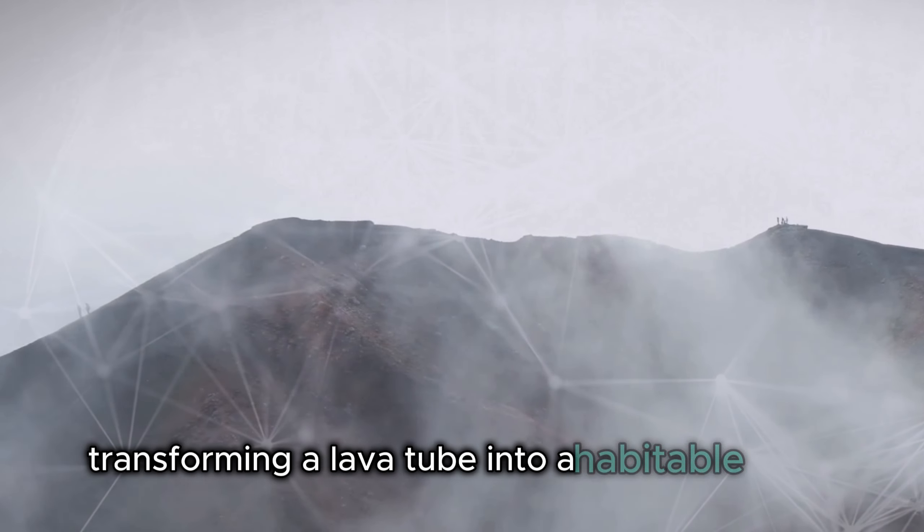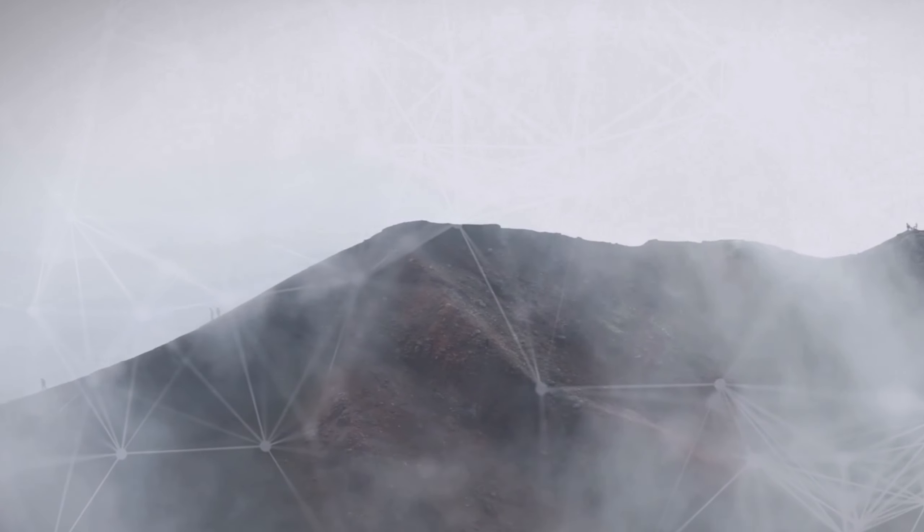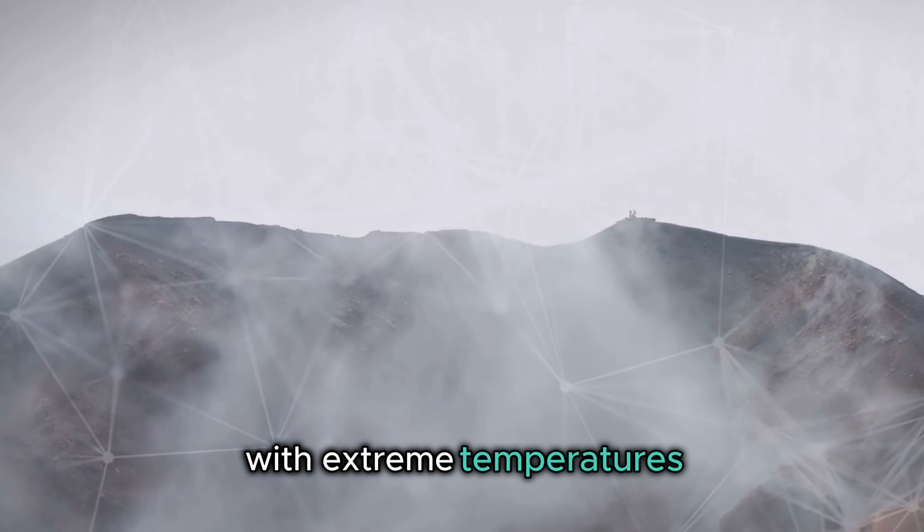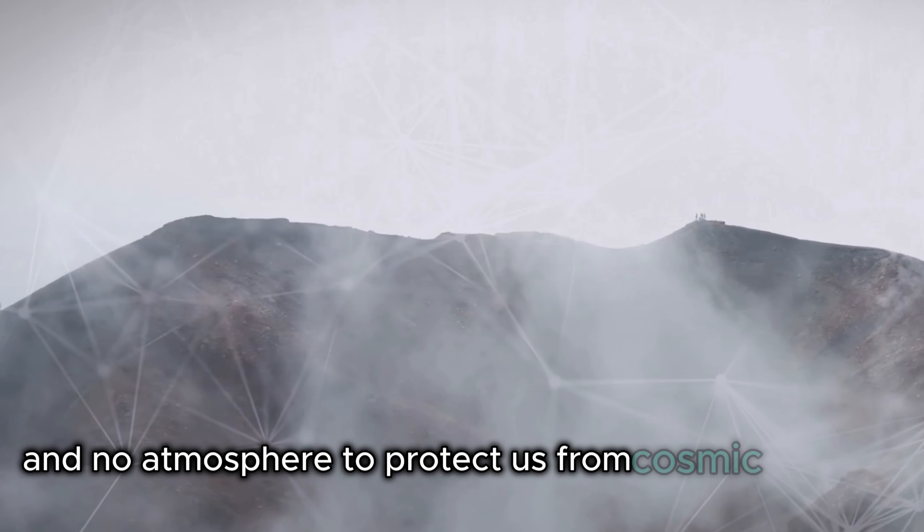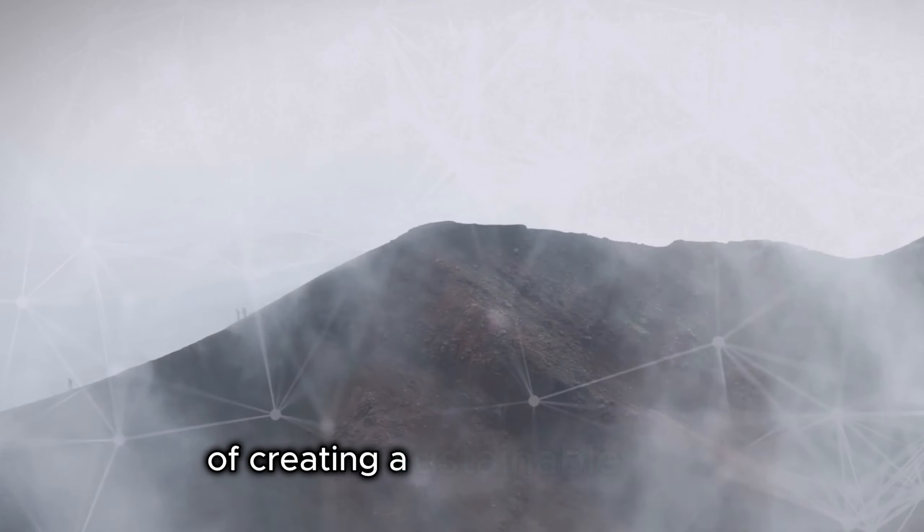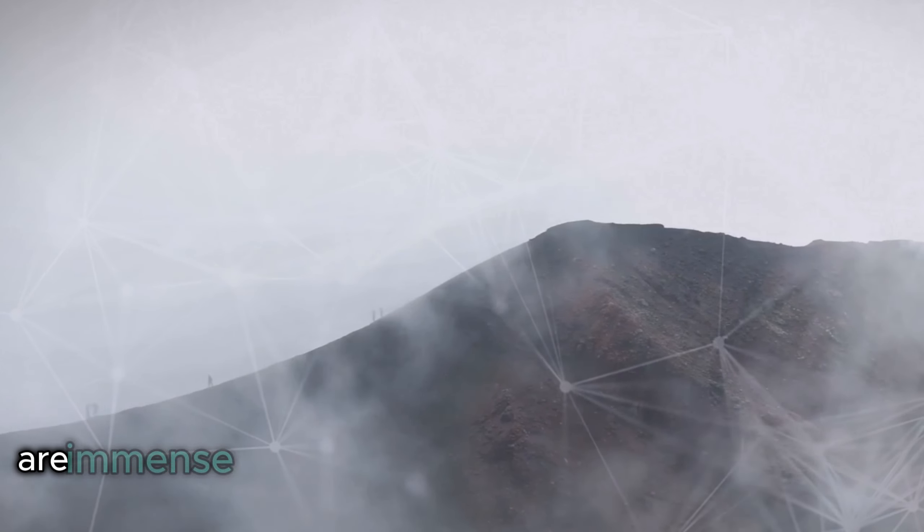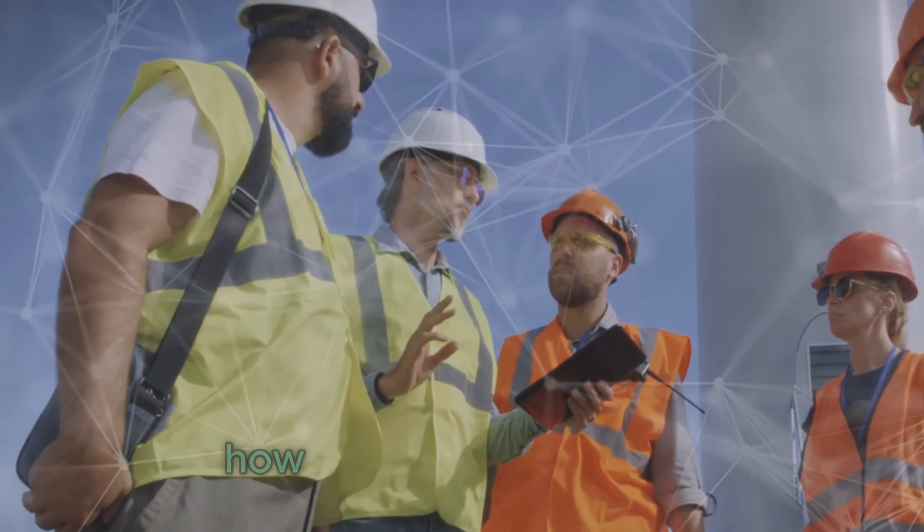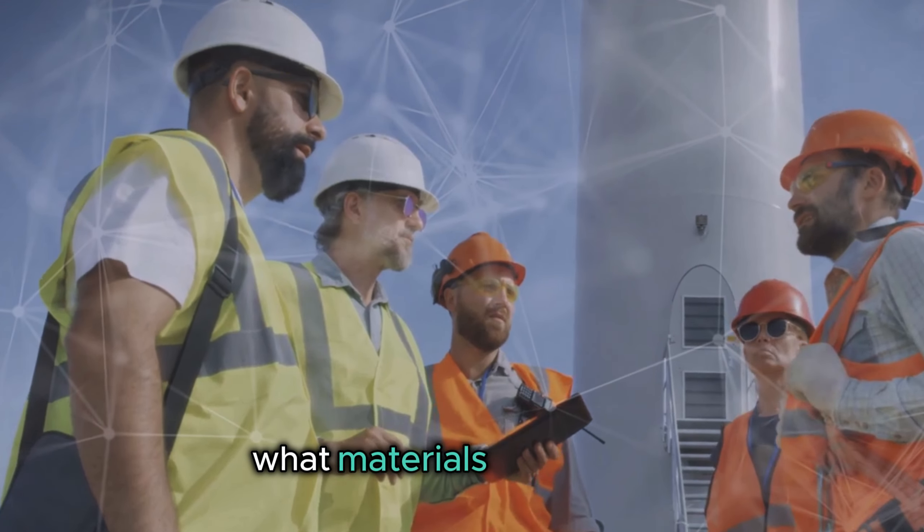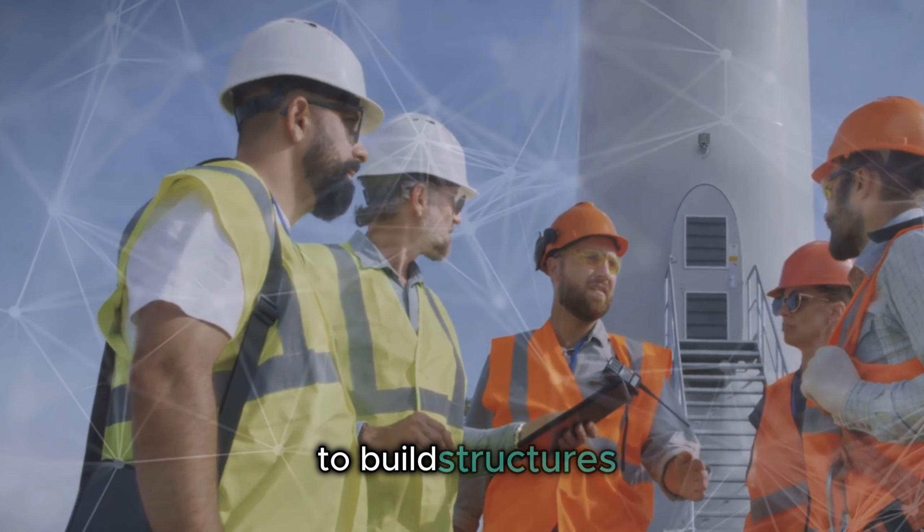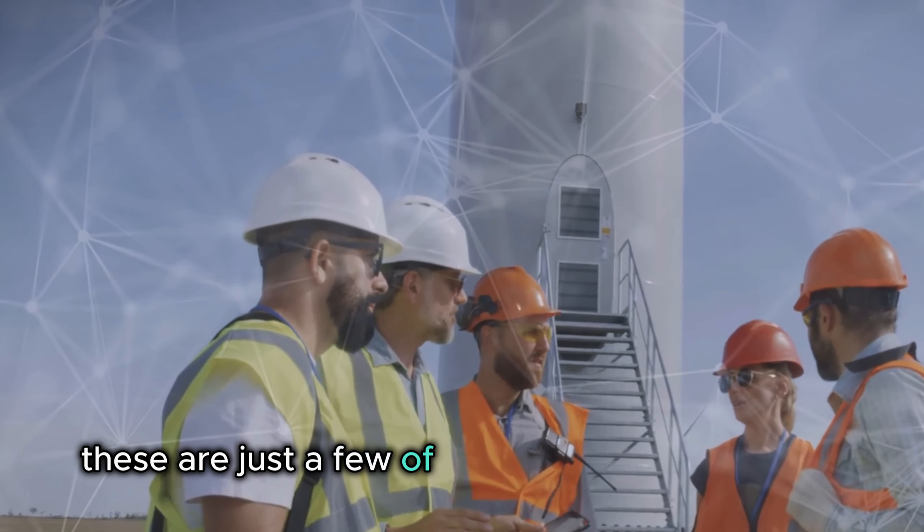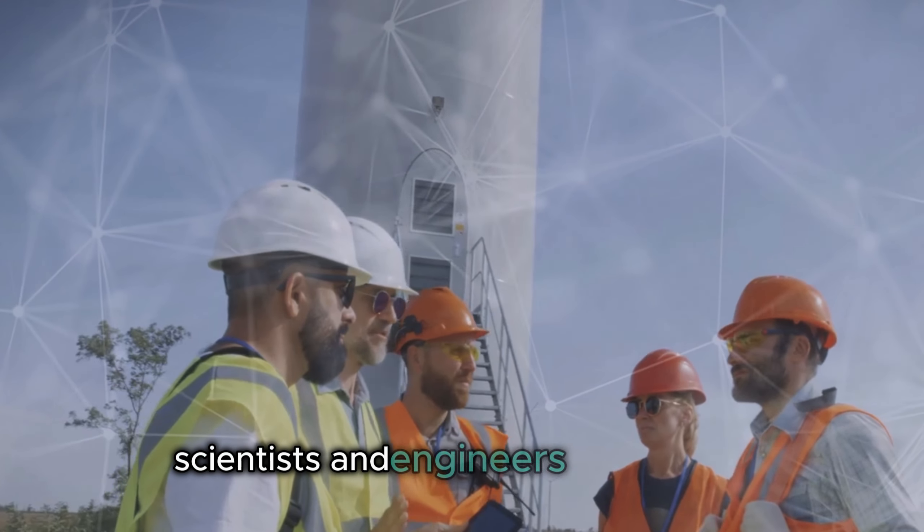Transforming a lava tube into a habitable space is no easy feat. The Moon's environment is harsh and unforgiving, with extreme temperatures and no atmosphere to protect us from cosmic radiation. Yet, the potential benefits of creating a sustainable habitat on the Moon are immense. We need to answer critical questions: How do we ensure the safety and well-being of the inhabitants? What materials can we use to build structures that can withstand the Moon's conditions?